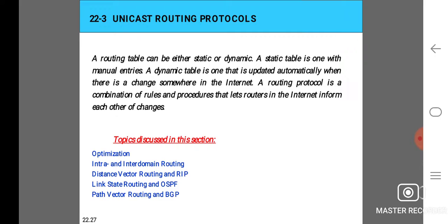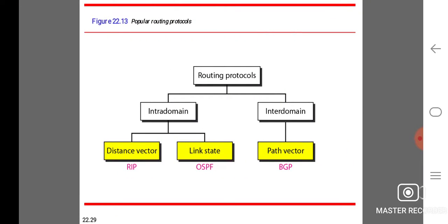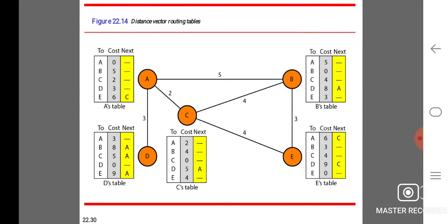Topics discussed in the sections are optimization, intra and inter domain routing, distance vector routing and RIP, link state routing and OSPF, path vector routing and BGP, and autonomous systems. Popular routing protocols include two different kinds: intra-domain and inter-domain. For intra-domain we are using distance vector that is RIP, and link state we are using OSPF. For inter-domain we are using path vector, that is BGP.